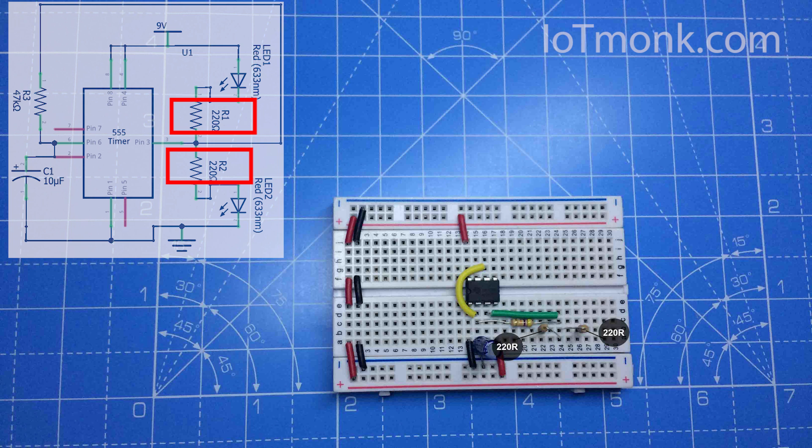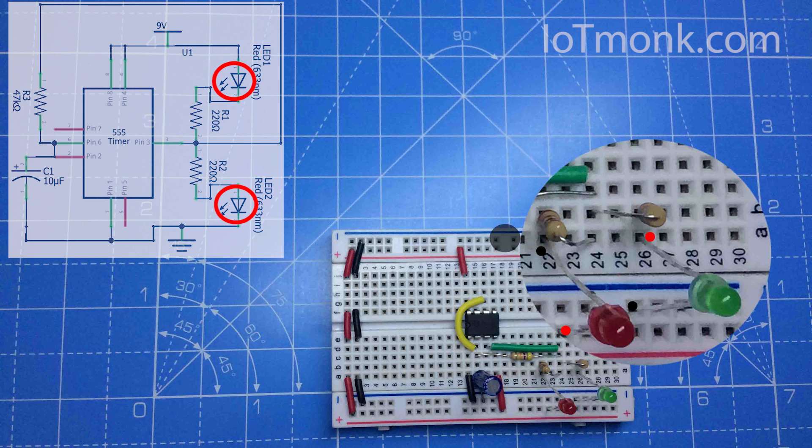Now take your LEDs and connect them. On one end, connect the positive terminal of the LED to the resistor and the negative terminal to the ground power rail. The second LED should have the negative terminal connected to the resistor leg and the other end to the positive power rail of the breadboard, just like this.